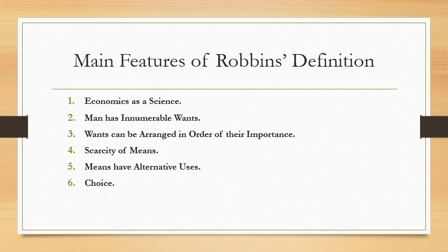Number six, choice. Once unlimited wants and limited means with alternative uses give rise to the problem of choice, people have to make choices in allocating their scarce resources in producing different commodities.